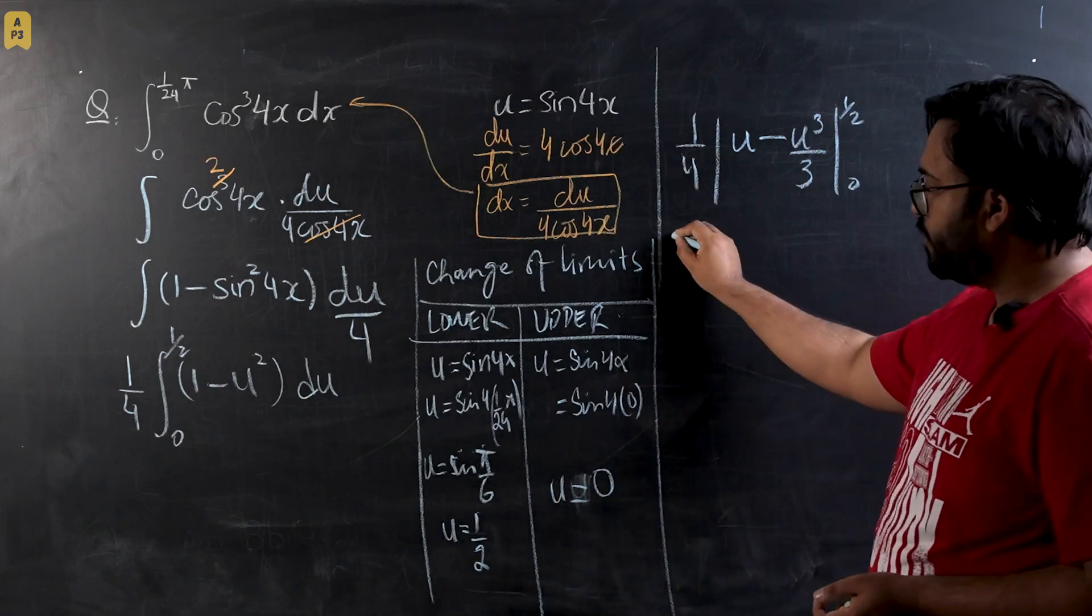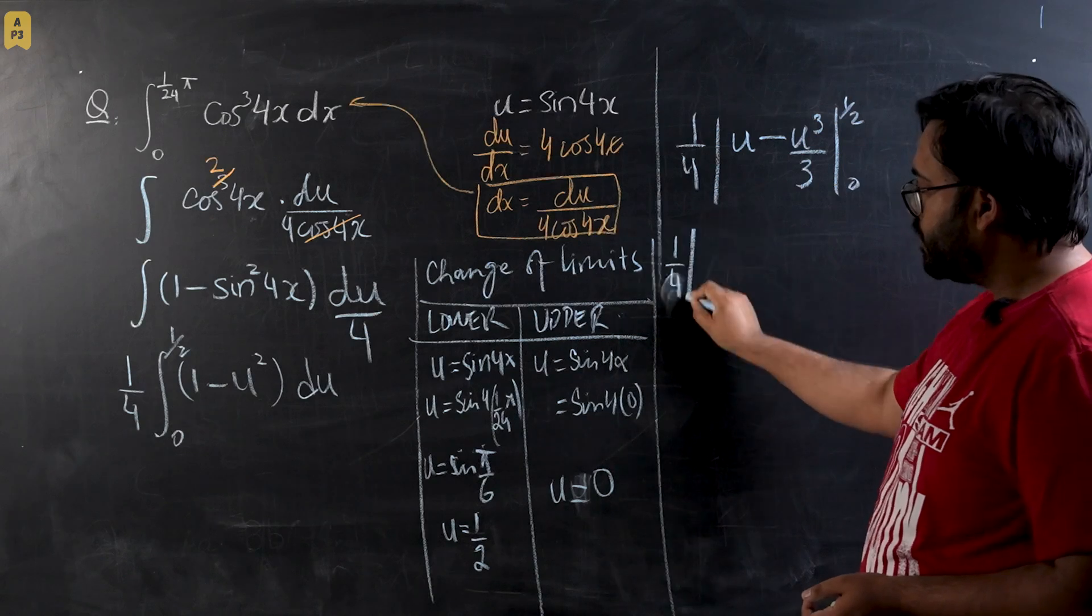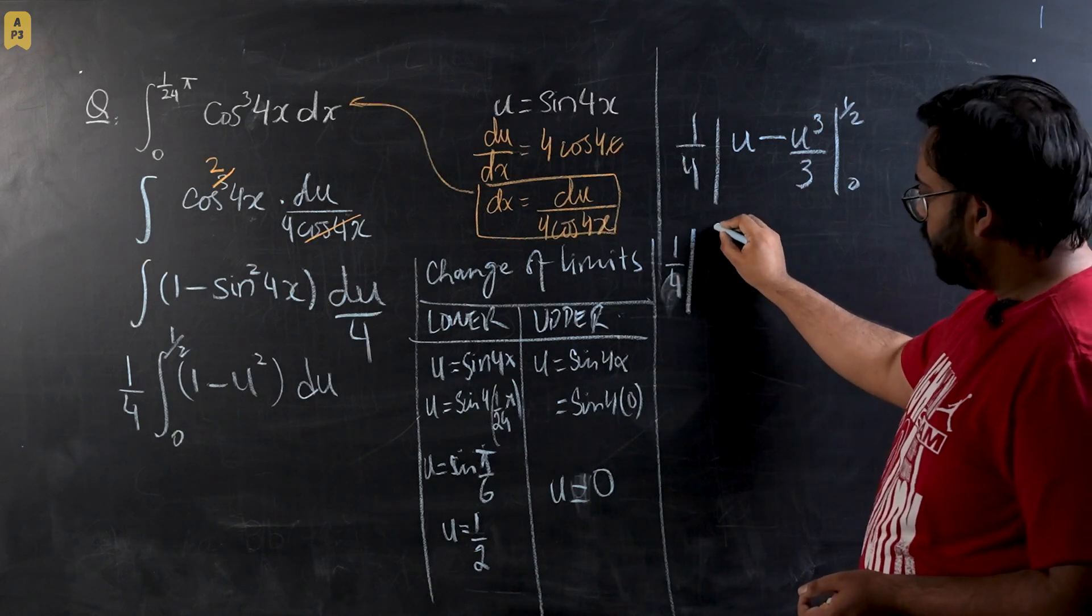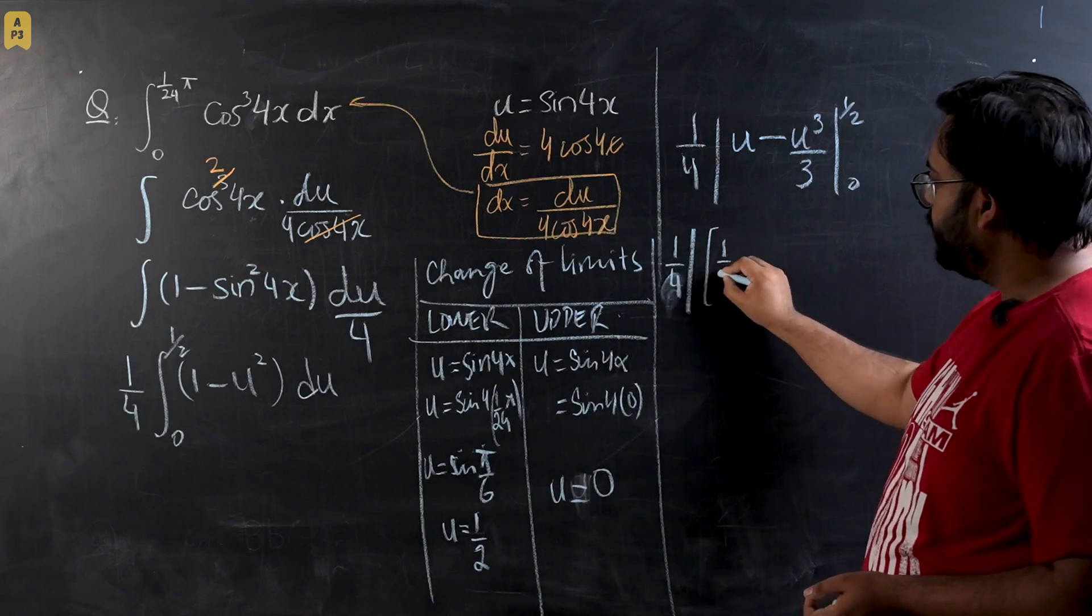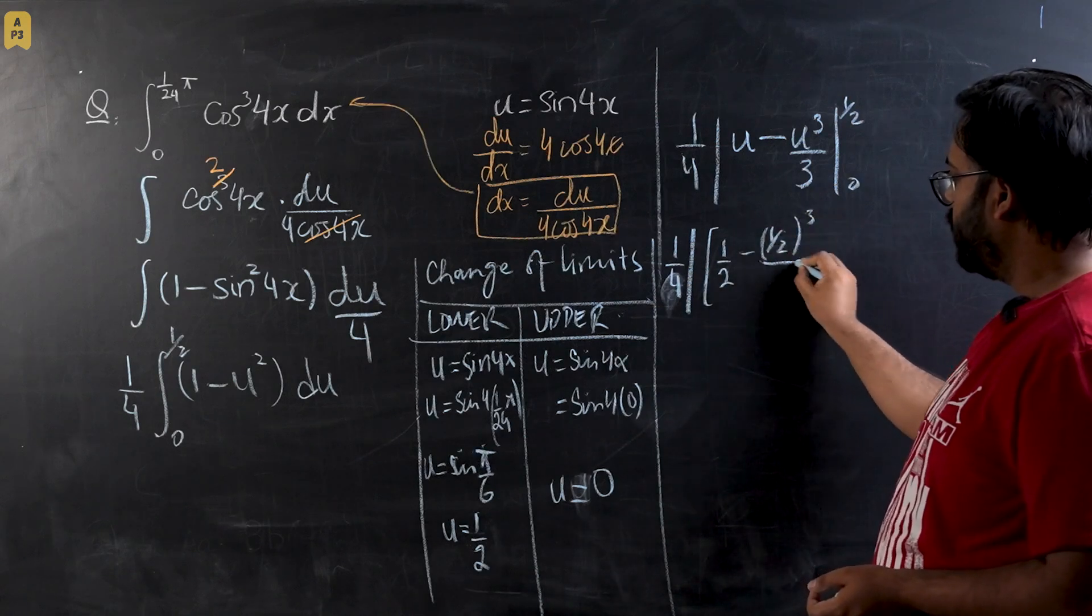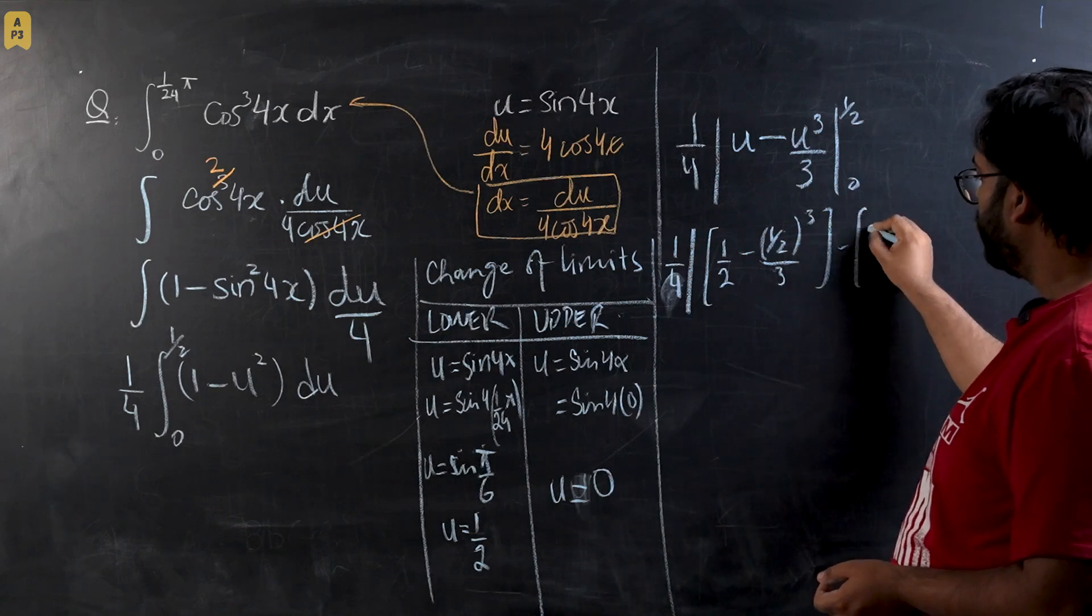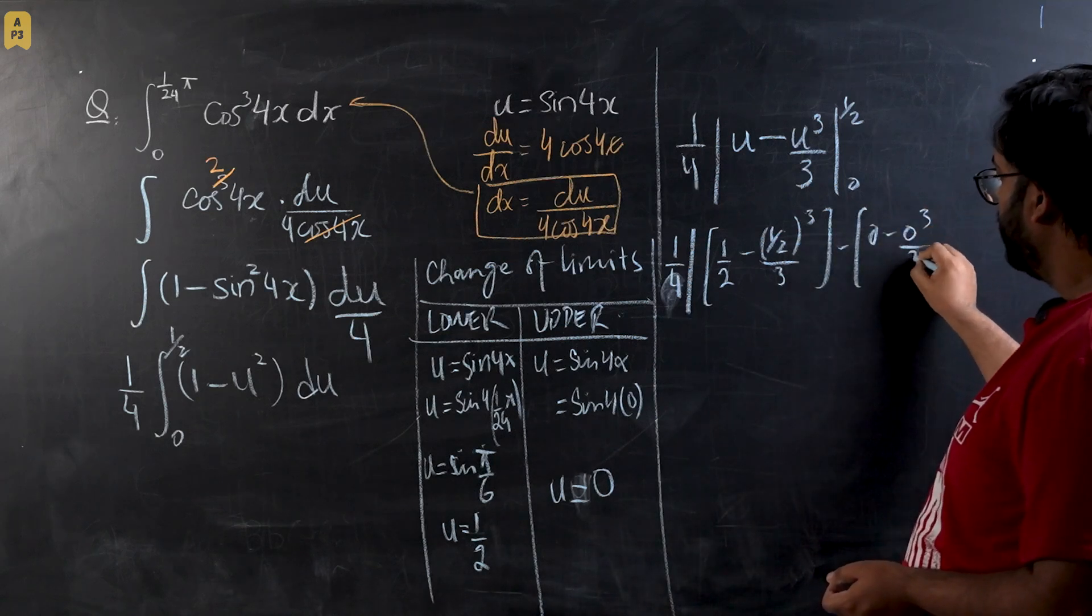We know that the limit for 0 will be 0, but we still will show that in our first step. This is 1/4 times the upper limit would be 1/2 - (1/2)³/3 minus 0 - 0³/3, which equals 0.